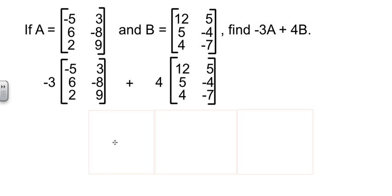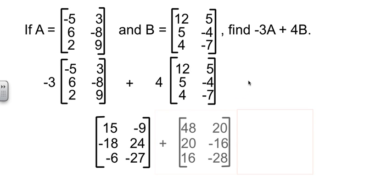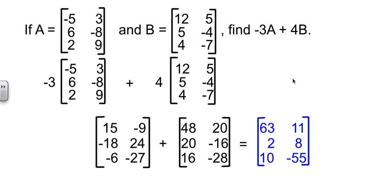That means we need to do negative 3 times the A matrix plus 4 times the B matrix. Well, if we distribute our negative 3 in, we get some values for those. If we distribute our 4 in here, we get values for those. And now it's just addition, so 15 plus 48, negative 9 plus 20, and so forth. And we get our final arithmetic there. It gives us our final matrix, which is equal to negative 3A plus 4B.